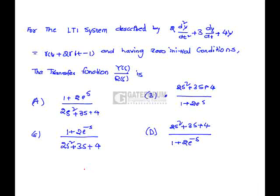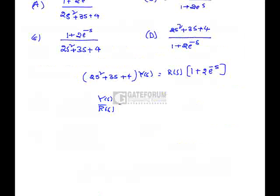If we apply the Laplace transform to the above second order differential equation, we will get 2s squared plus 3s plus 4, this is y of s, equals to 1 plus 2e power minus s, because here the ramp function is delayed by 1 unit, hence it is multiplied by e power minus s. So y of s by r of s is nothing but the transfer function under zero initial conditions: 1 plus 2e to the minus s divided by 2s squared plus 3s plus 4. Hence option C is correct.